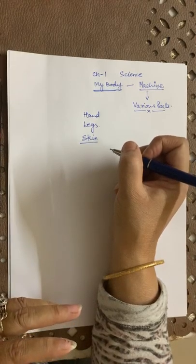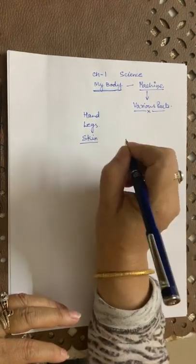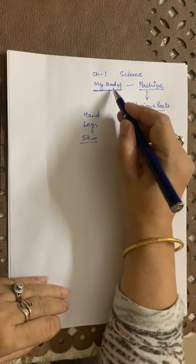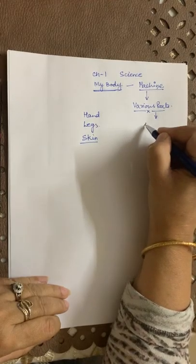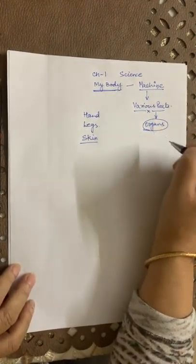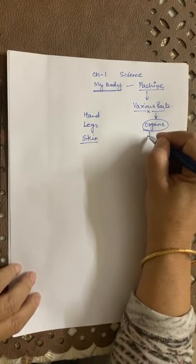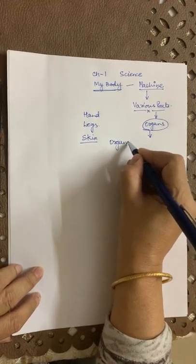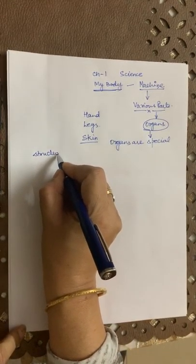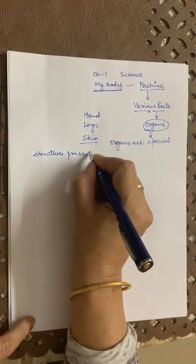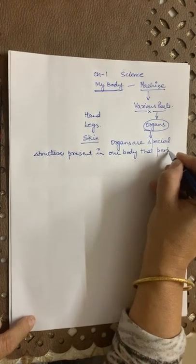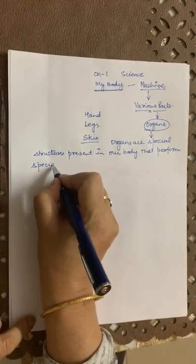Skin gives us the sensation of coldness, hotness, and whether someone touches you, you can feel it. So when we are talking about the body, we will talk about the organs of the body. This term 'organ' is new for you people, so I will explain what an organ is.